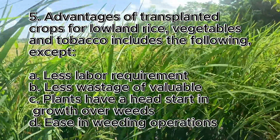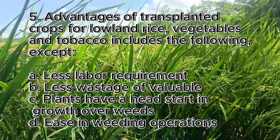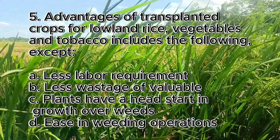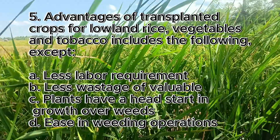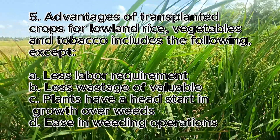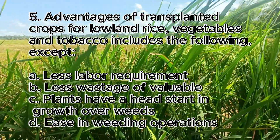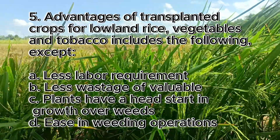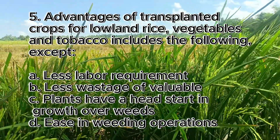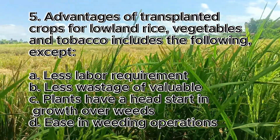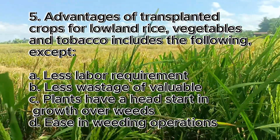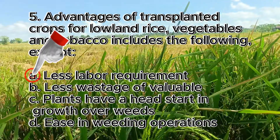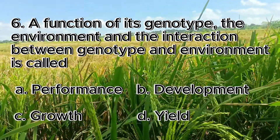Number 5. Advantages of transplanted crops for lowland rice, vegetables, and tobacco includes the following, except. A. Less labor requirement, B. Less wastage of valuable seeds, C. Plants have a head start in growth over weeds, D. Ease in weeding operations. The answer is letter A, less labor requirement.